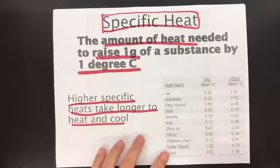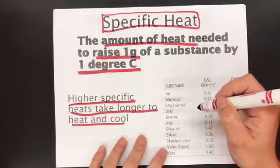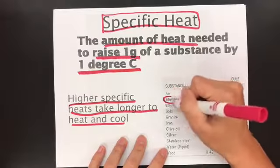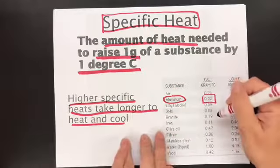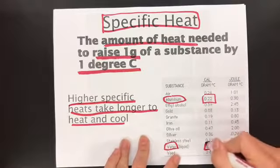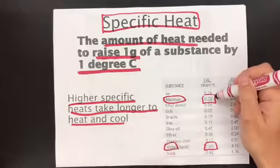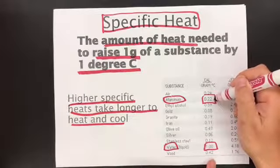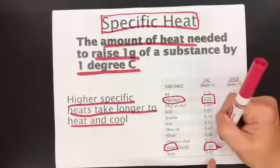So for example, let's see here. We've got aluminum has a specific heat of 0.22 versus, let's say, water. It has a specific heat of 1. Since aluminum has a specific heat of 0.22, it's going to cool down or heat up a lot quicker than water is.